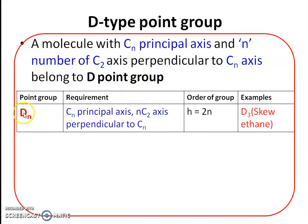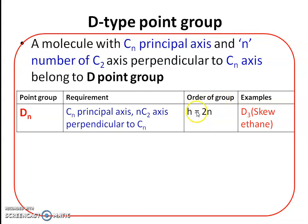For example, a molecule may belong to the Dn point group. In that molecule there will be a Cn principal axis and n number of C2 axes perpendicular to Cn. The order of this point group is equal to 2n, meaning there are 2n number of symmetry elements.